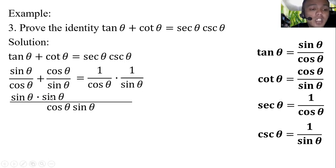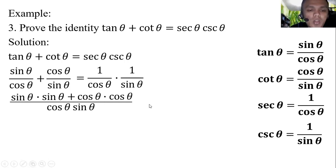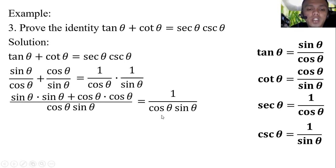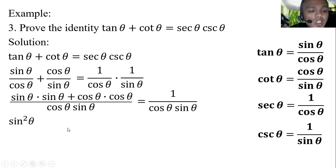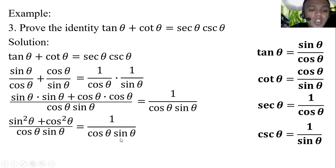Continuing, cosine theta times sine theta divided by sine theta is cosine theta, and cosine theta times cosine theta gives cosine squared theta. On the right side, since it is multiplication, we add numerator to numerator and denominator to denominator: 1 times 1 is 1, and cosine theta times sine theta is cosine theta sine theta. So we have sine squared theta plus cosine squared theta all over cosine theta sine theta, equal to 1 over cosine theta sine theta.